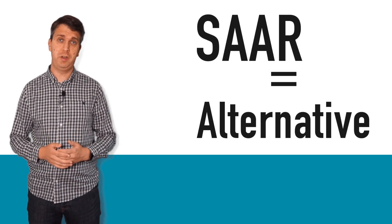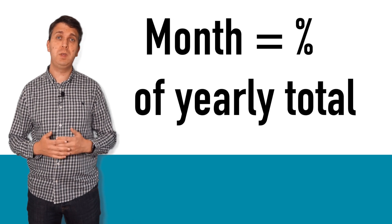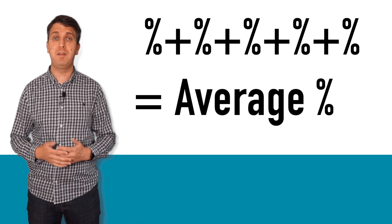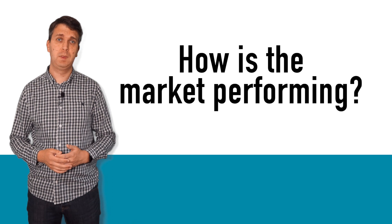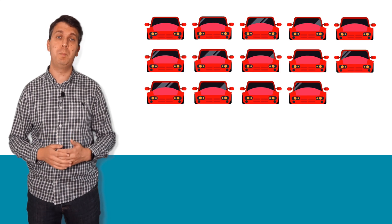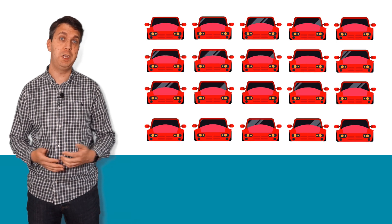SAR provides an alternative. By breaking down the monthly figures as a percentage of the final year total and then working out an average based on an extended time period, we can see more clearly how the market is doing. Taking that average percentage, we can work out what the likely total volume of cars sold in the year will be, based on one month's figures or a period of figures as we wish.